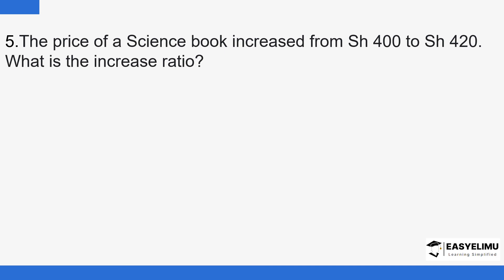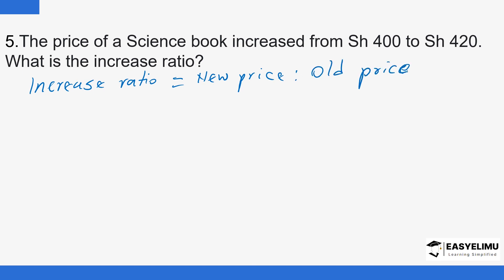We have another example: the price of a son's book is increased from 400 to 420. We are supposed to find the increase ratio. Now that you know what an increasing ratio is and how we find it, we know the increase ratio is given by new price to old price. Our new price is 420 since the value increased from 400 to 420. So new price to old price is 420 to 400.